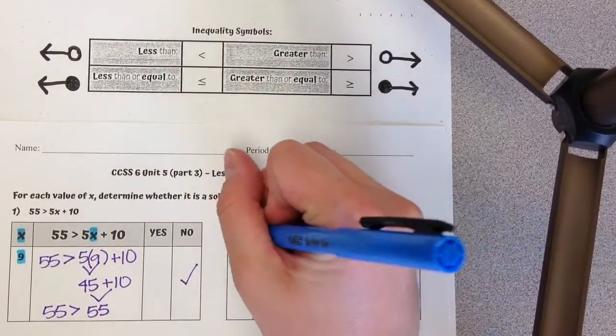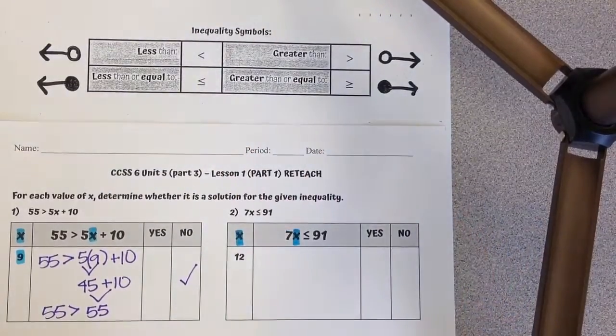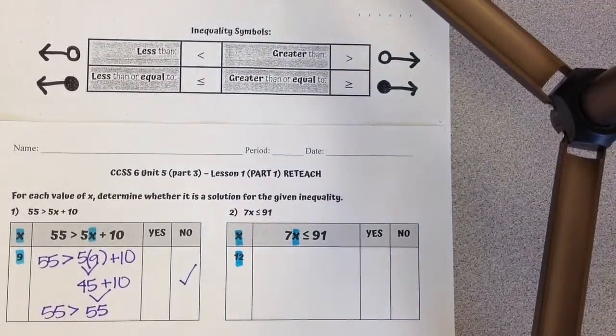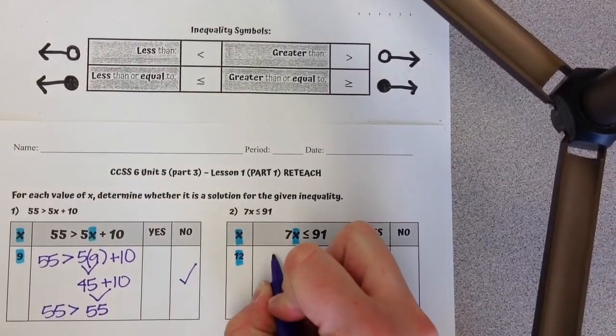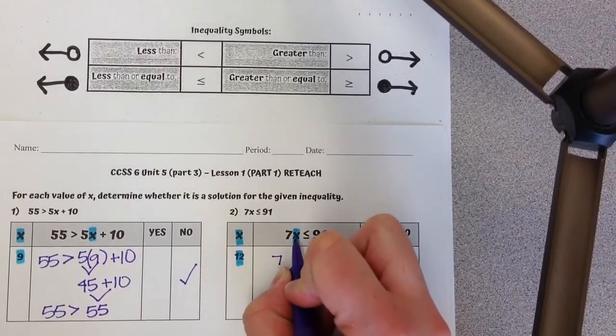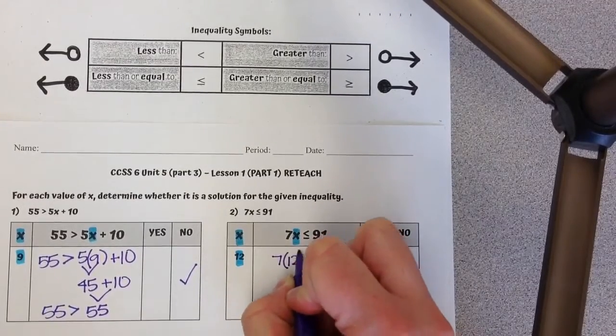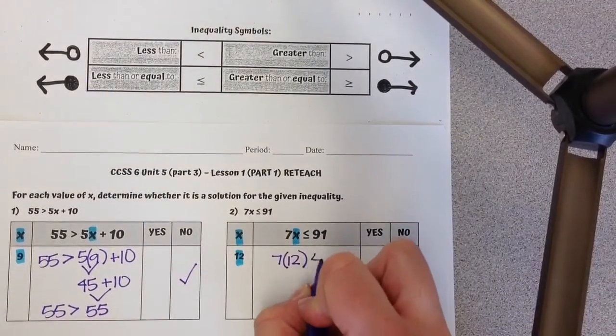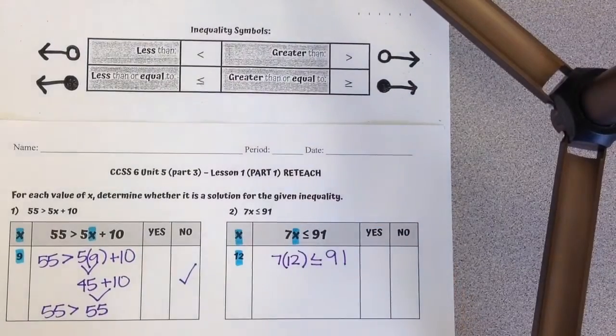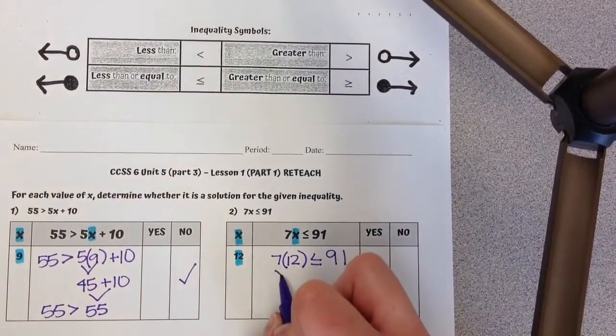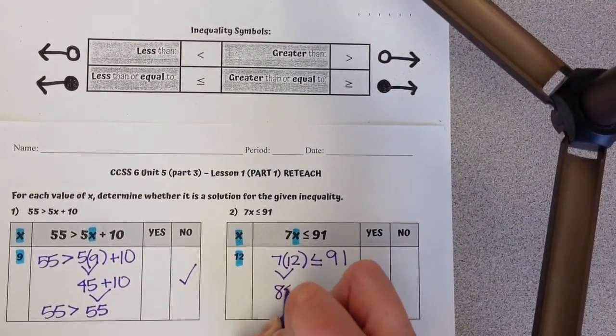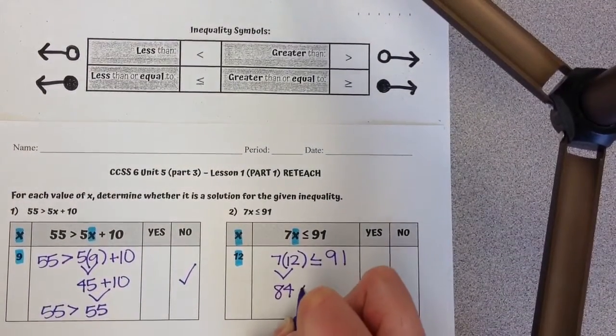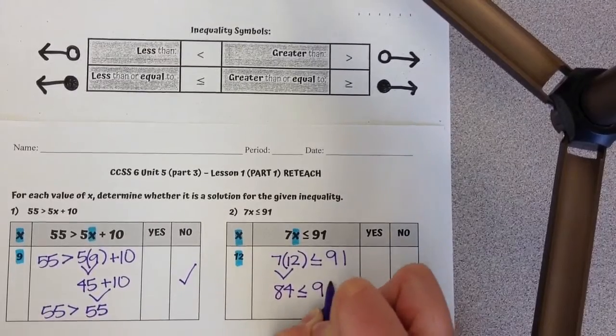Number 2, again, highlight my x. I'm plugging in 12 for x. So 7, I'm going to replace this with the 12. 7 times 12 is less than or equal to 91. I do 7 times 12 in my calculator, which equals 84. I'm going to bring this all down, less than or equal to 91.